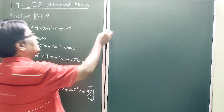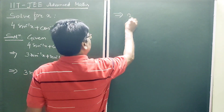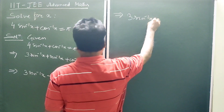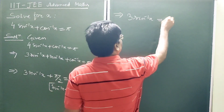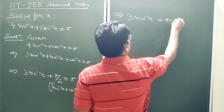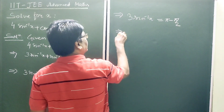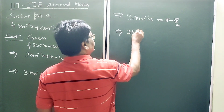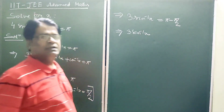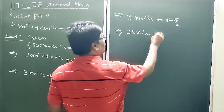This again implies 3·sin⁻¹(x) is equal to π minus π/2, which gives 3·sin⁻¹(x) is equal to π/2.